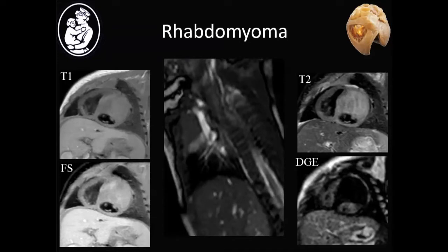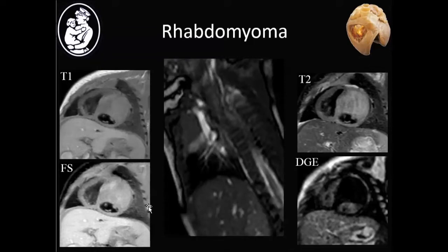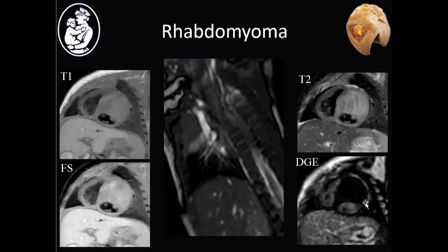These MRI sequences show a rhabdomyoma. On T1-weighted imaging, it is slightly hyperintense or iso-intense compared to normal myocardium. On T2, it appears slightly hyperintense. With fat suppression, the subcutaneous fat is suppressed but not the tumor, indicating it is not a lipomatous tumor. On delayed gadolinium enhancement, there is no significant enhancement — the tumor is quite dark like the rest of the myocardium, with only the blood pool lighting up.